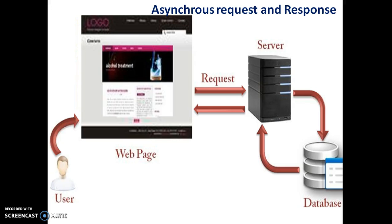In the asynchronous model, the client sends the request, then the Ajax engine accepts the request. The Ajax engine processes the portion of the request; the remaining request that must be processed by the server is forwarded to the server. Once the Ajax engine completes processing, it sends the response directly back to the client. The client receives the portion of the response from the Ajax engine and then prepares the next request.